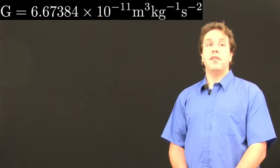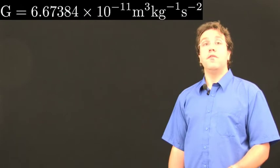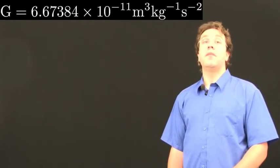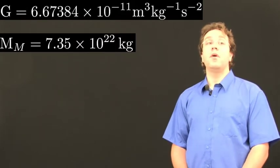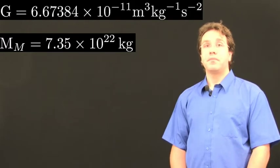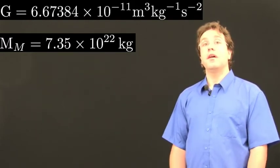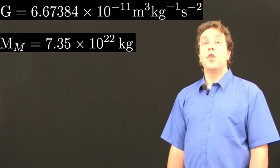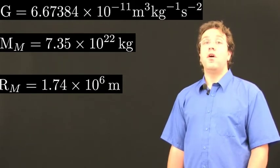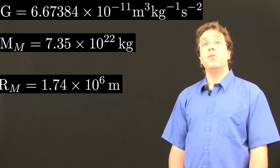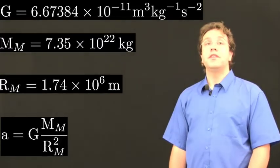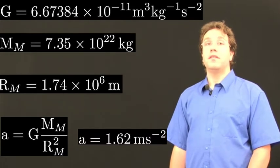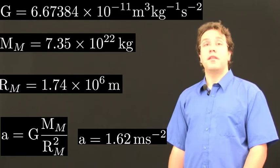So what is the acceleration due to gravity on the surface of the Moon? Our universal gravitational constant is going to be exactly the same: 6.67384 times 10 to the minus 11 metres cubed per kilogram per second squared. The mass of the Moon is about 1/81st of that of the Earth — much less massive. The mass we're going to use is 7.35 times 10 to the 22 kilograms. The Moon is also smaller than the Earth, so its radius is 1,740 kilometres, or 1.74 times 10 to the 6 metres. Substituting those numbers in, the acceleration due to gravity on the surface of the Moon is 1.62 metres per second squared.